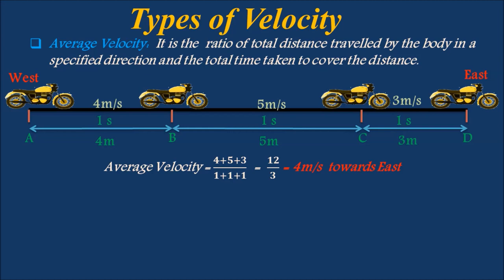Average velocity is the sum of 4 plus 5 plus 3 divided by 3, which equals 4 meters per second towards east.